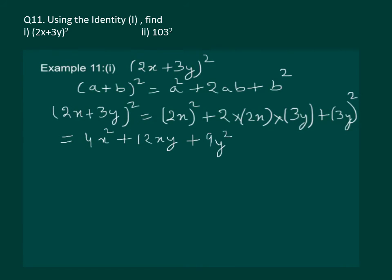Which is the required answer. So we can see that using the identity we can multiply the binomial very easily and in fewer steps.